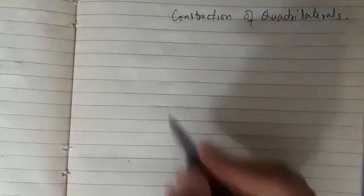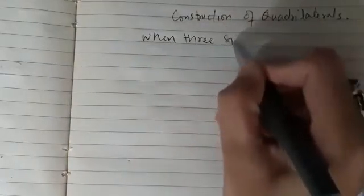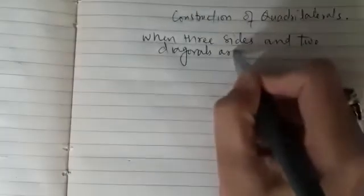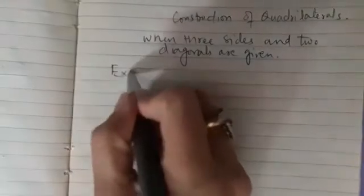Today we are going to learn how to construct a quadrilateral when three sides and two diagonals are given. So let us understand this by the help of an example.